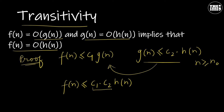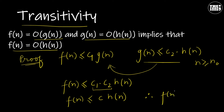As c1 and c2 are constants, we can also write it as f(n) ≤ c·h(n), where c is c1 times c2. Therefore, it is proved that f(n) is also the Big O of h(n).